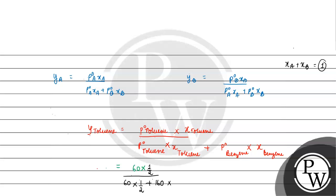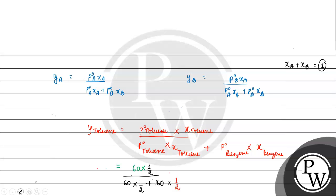Note that YA + YB = (P°A·XA + P°B·XB) / (P°A·XA + P°B·XB) = 1, confirming mole fractions sum to 1. So the mole fraction of benzene is also 1/2. Completing the calculation: Y_toluene = 30 / (30 + 80) = 30 / 110 = 3/11 ≈ 0.27.